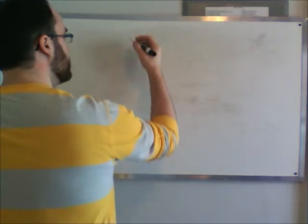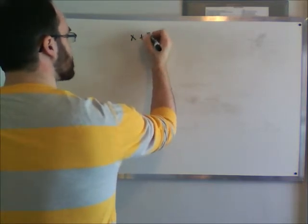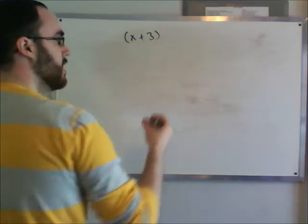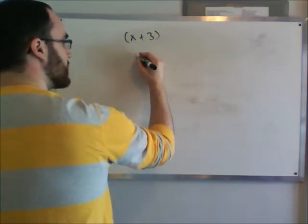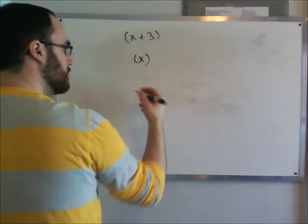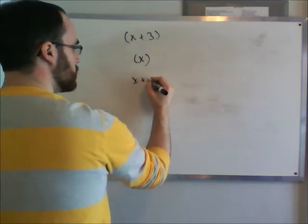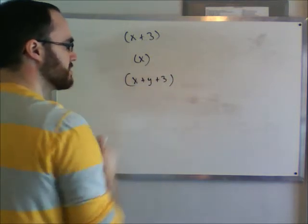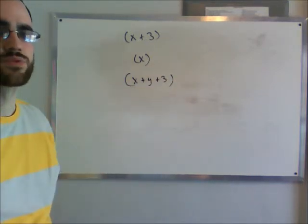A binomial is when you have x plus 3. This is a binomial because it has two things inside the brackets. A monomial is just a thing like x. A trinomial is x plus y plus 3 or something along those lines. It just means how many things are inside it, added or subtracted.